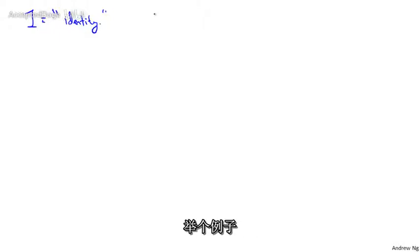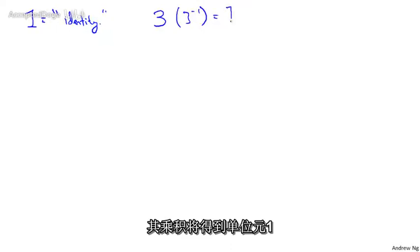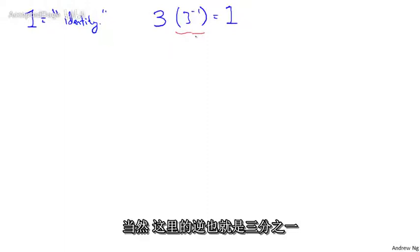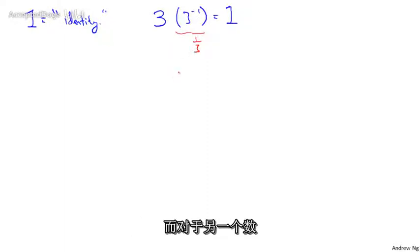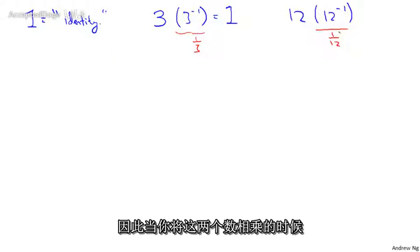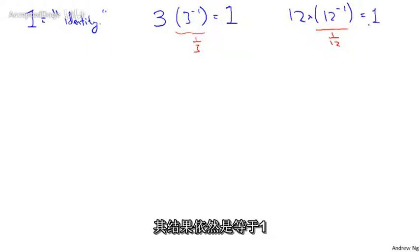For example, given the number 3, there exists some number, which happens to be 3 inverse, so that that number times 3 gives you back the identity element 1. And 3 inverse, of course, is just 1/3. And given some other number, maybe 12, there's some number which is the inverse of 12, written as 12 to the minus 1, or really this is just 1/12, so that when you multiply these two things together, the product is equal to the identity element 1 again.